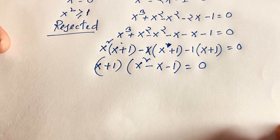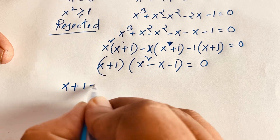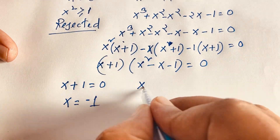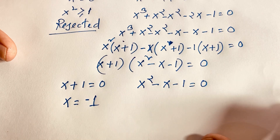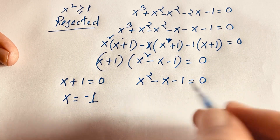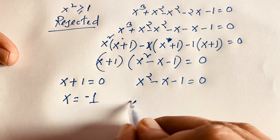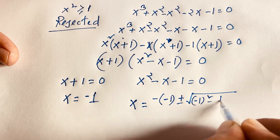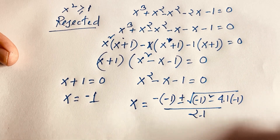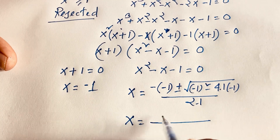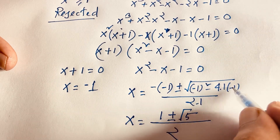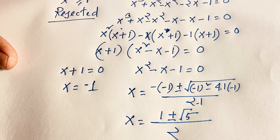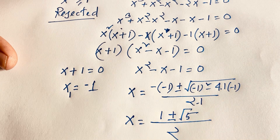Since x plus 1 is common, we factor to get (x plus 1)(x squared minus x minus 1) equals 0. This gives two cases: x plus 1 equals 0, so x equals negative 1; and x squared minus x minus 1 equals 0. For the quadratic, using the quadratic formula x equals negative b plus or minus square root of b squared minus 4ac over 2a, with a equals 1, b equals negative 1, c equals negative 1, we get x equals 1 plus or minus square root of 1 plus 4 over 2, which is x equals 1 plus or minus square root of 5 over 2.